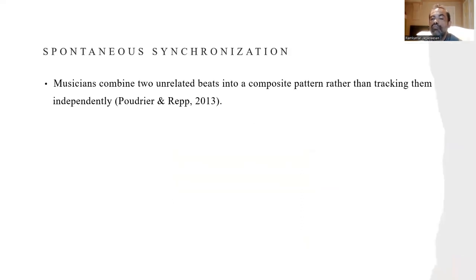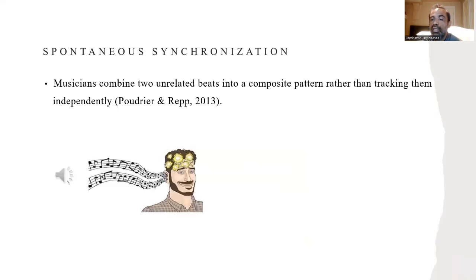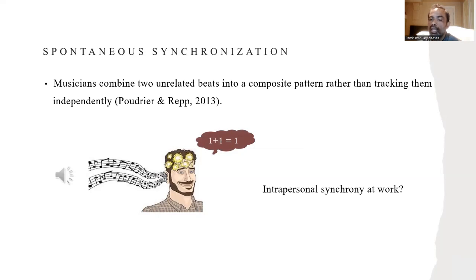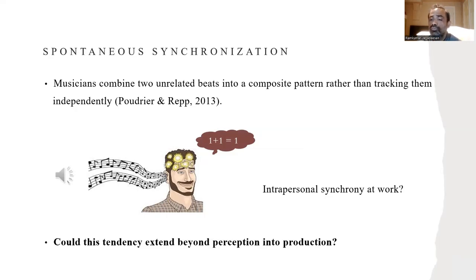There is also evidence showing that musicians combine two unrelated beats into one composite pattern rather than tracking them independently. For example, like this guy here, the musicians in the study listened to two tracks but combined them to perceive them as one, reducing multiple periodicities into one. This is like intrapersonal synchronization, we thought, but between perceived periodicities. So our question was, could this tendency extend beyond perception into production?